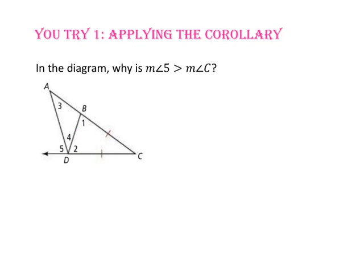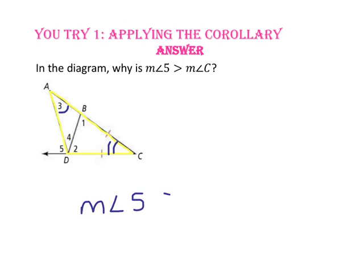Pause the video and do you-try number 1. In the diagram, why is the measure of angle 5 greater than the measure of angle C? Since angle 5 is an exterior angle to triangle DAC, and angle 3 and angle C are its remote interior angles, the measure of angle 5 would be greater than either of the remote interior angles, so it's greater than the measure of angle C. This is by the corollary to the triangle exterior angle theorem.